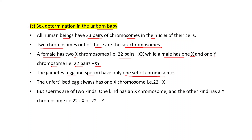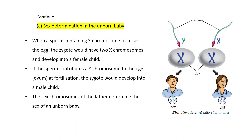The unfertilized egg always has one X chromosome, that is 22 plus X. But sperms are of two kinds: one kind has an X chromosome and the other kind has a Y chromosome, that is 22 plus X or 22 plus Y. When a sperm containing an X chromosome fertilizes the egg, the child would have two X chromosomes and develop into a female child. If the sperm contributes a Y chromosome to the egg at fertilization, the child would develop into a male child. The sex chromosomes of the father determine the sex of an unborn baby.